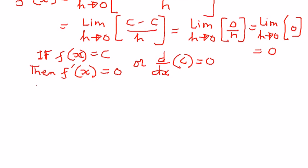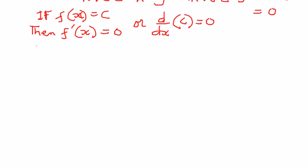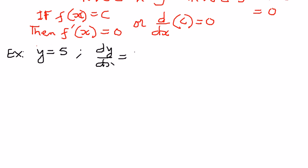Let us look at some simple examples. Example 1: if y is equal to 5, and we want to find the derivative, dy by dx is going to be equal to 0, because 5 is a constant. Since the number does not have any x variables attached to it, it goes to 0.